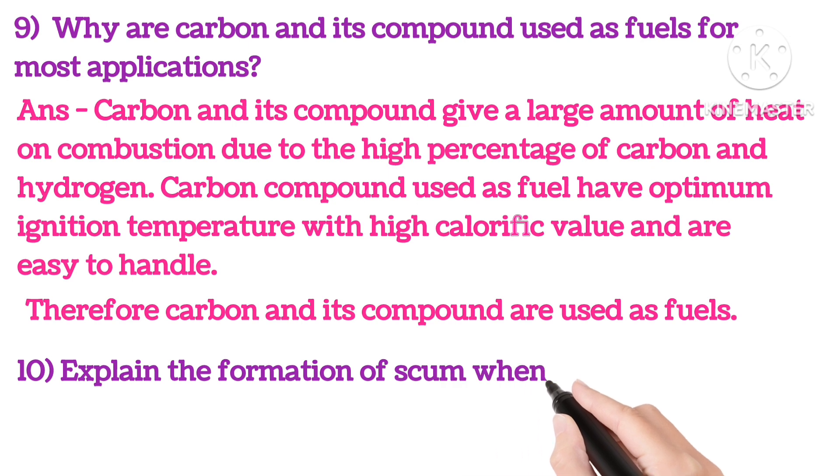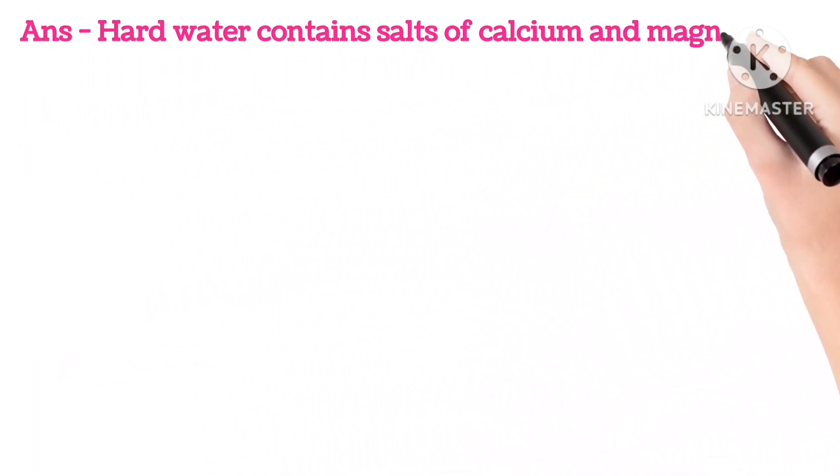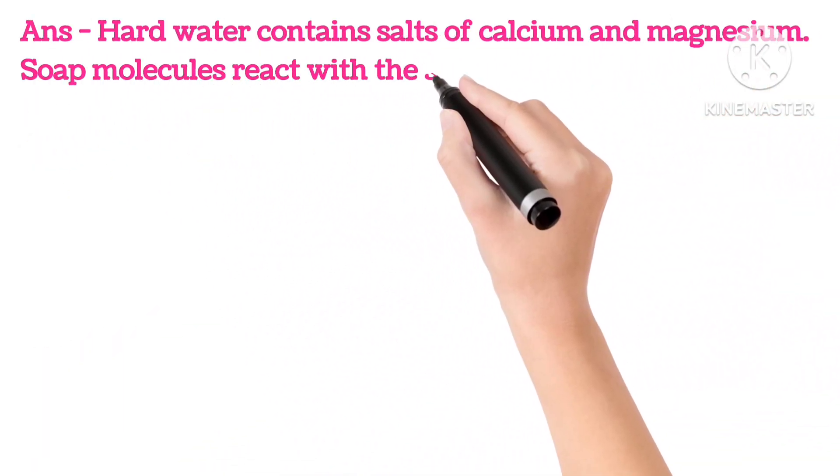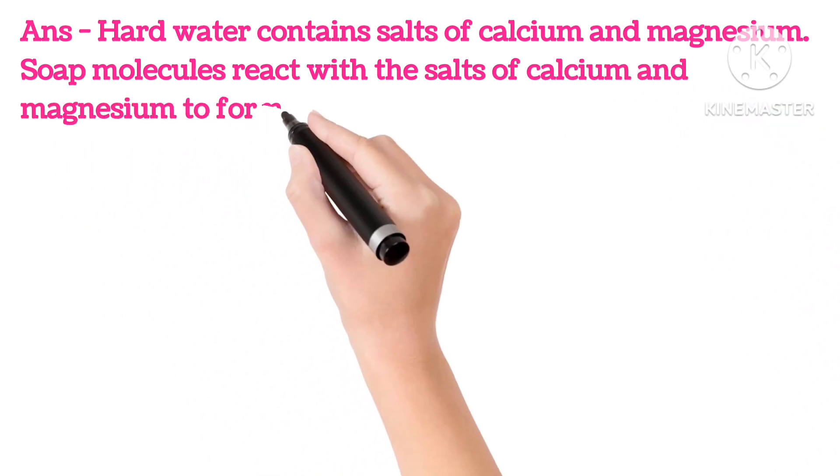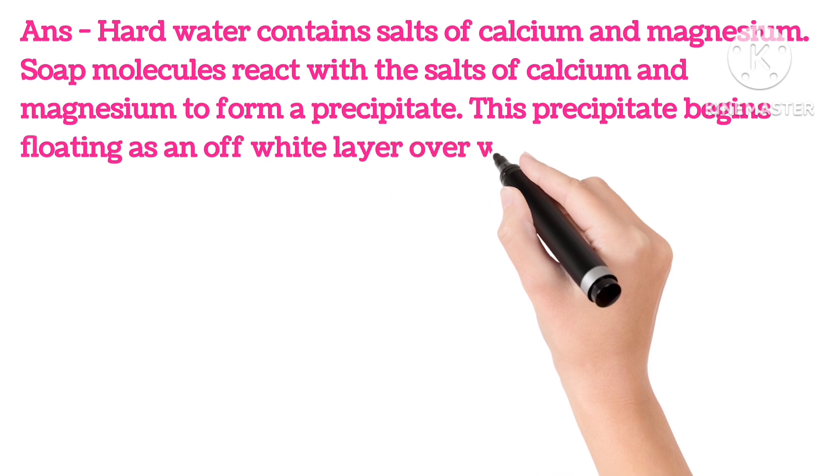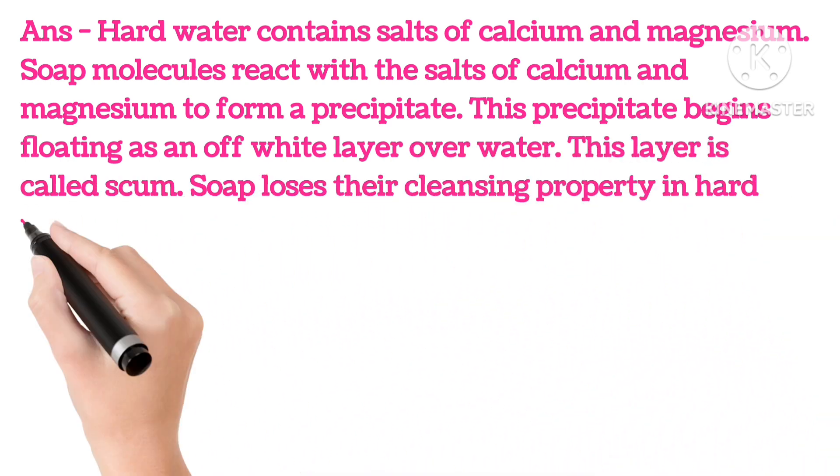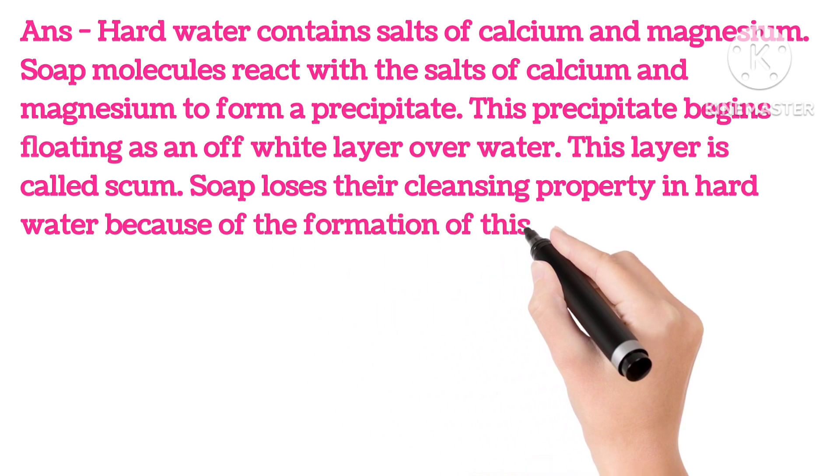Tenth, explain the formation of scum when hard water is treated with soap. Hard water contains salts of calcium and magnesium. Soap molecules react with the salts of calcium and magnesium to form a precipitate. This precipitate begins floating as an off-white layer over water. This layer is called scum. Soap loses its cleansing property in hard water because of the formation of this scum.